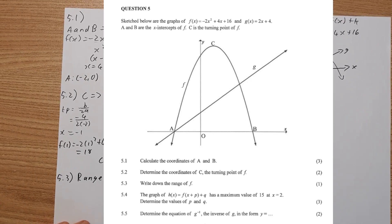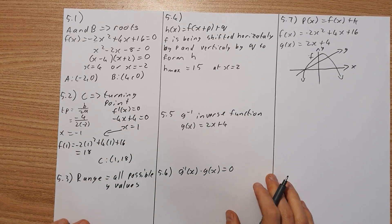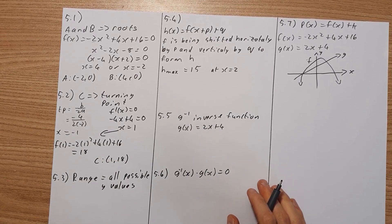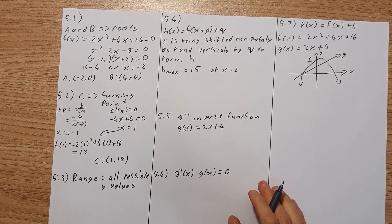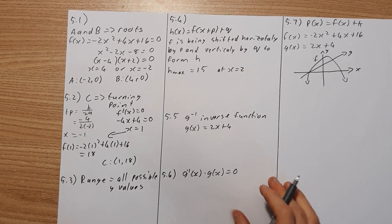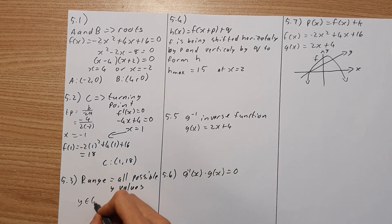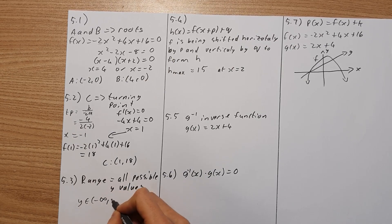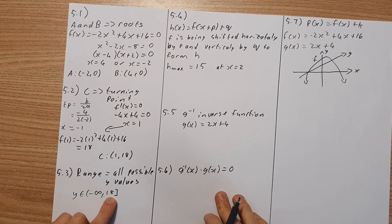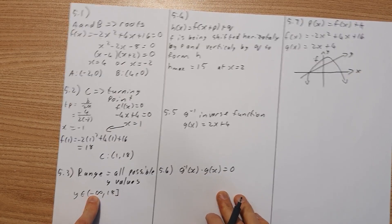Now 5.3 talks about the range. Now the range is all the possible y values of your function. So if you look at your function over there, we can see that the maximum point, which is your turning point, is C, which is 18 for your y values. And then it runs all the way down to negative infinity. So the range is going to be for your y values, which is an element of negative infinity. And then we're including 18 because that's involving our turning point. We don't include infinity because it's not a number. It's a concept.